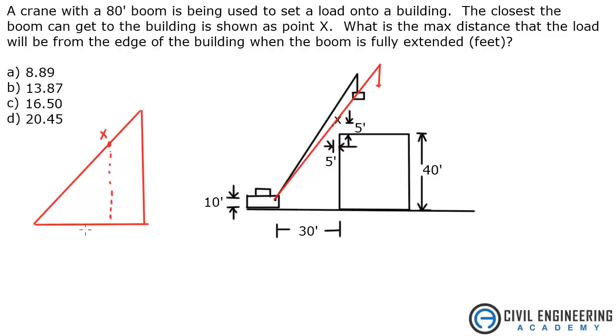So let's look at this. We know that from the boom to the edge of the building is 30 feet. But to point X, you have to subtract 5 feet.